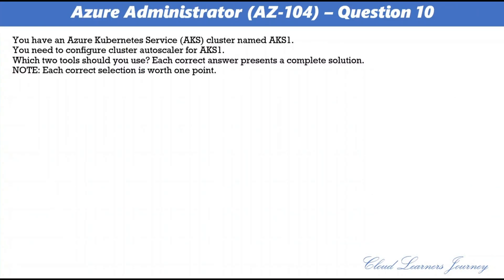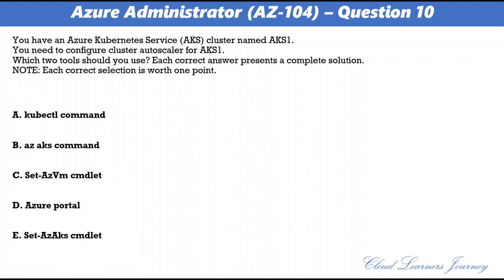Question 10. You have an Azure Kubernetes Service cluster named AKS1. You need to configure cluster autoscaler for AKS1. Which two tools should you use? The correct options are B. az aks command, and D. Azure portal. Explanation: A. kubectl is used for configuring Kubernetes, not AKS cluster autoscaler. B. az aks command is used for AKS cluster configuration. C. Set-AzVM cmdlet is used for VMs. D. Azure portal — under Node Pools, press Scale, then choose Autoscale. E. Set-AzAks creates or updates an AKS cluster but is not correct here.